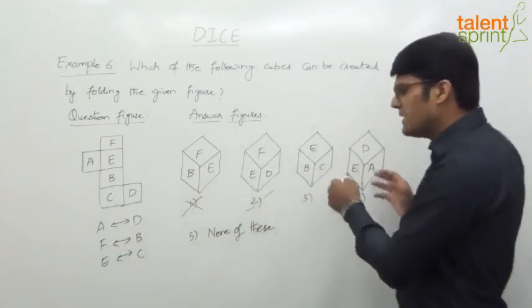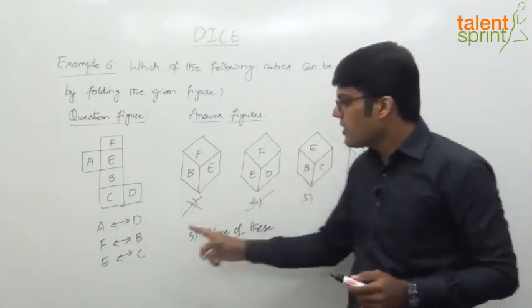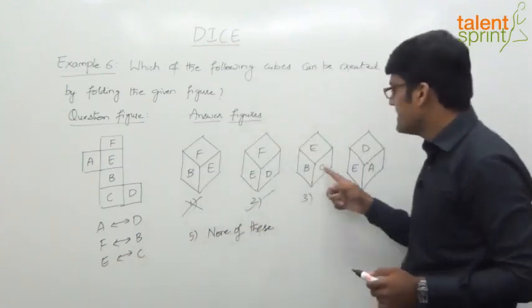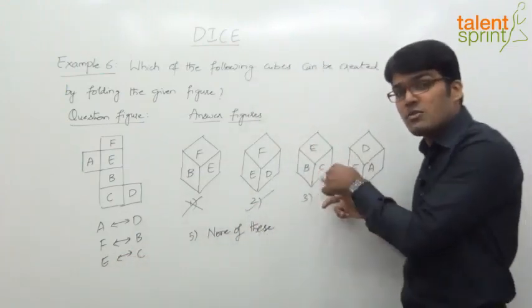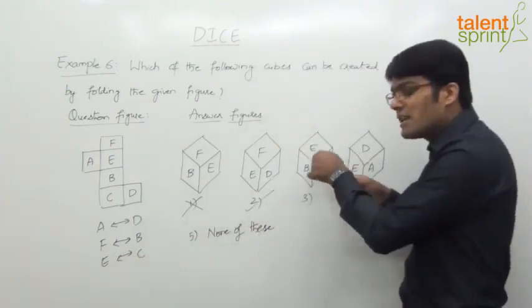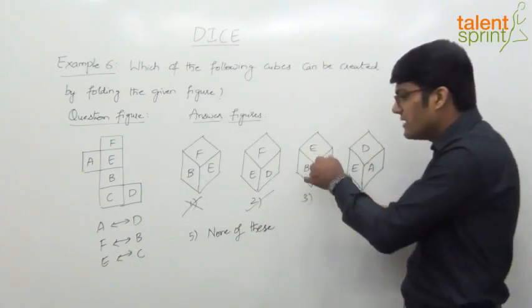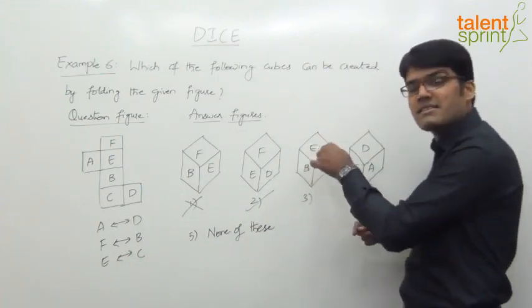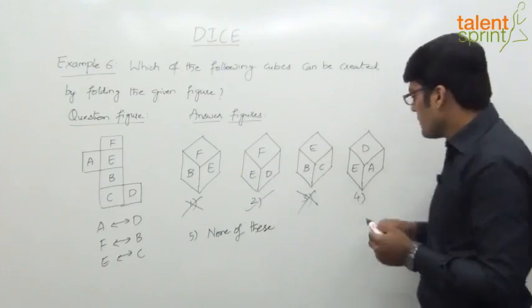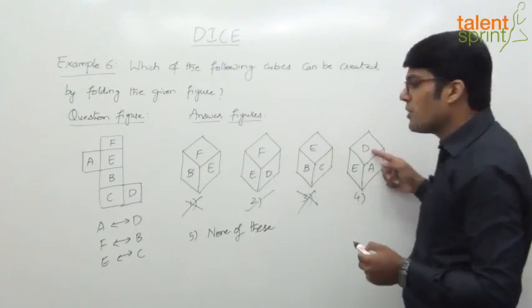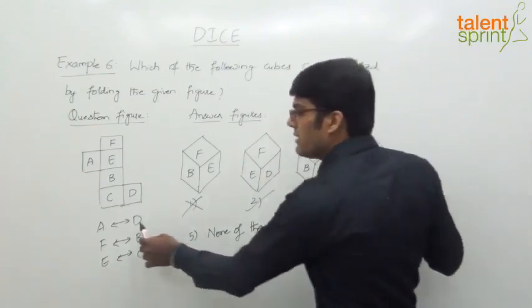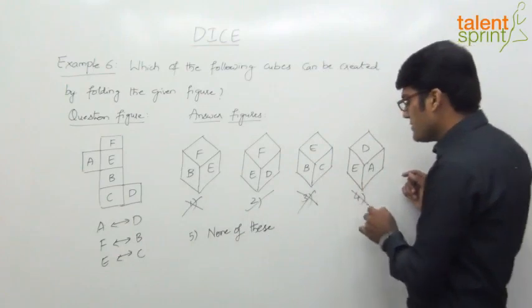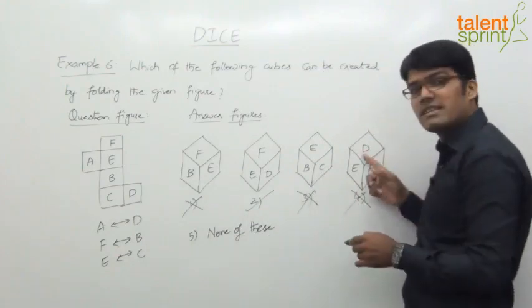Likewise, checking options 3 and 4: for option 3, look at E — what is opposite to E? C. But C is given here, so C should not be given. Opposite faces should not be shown as adjacent. E and C are opposite, yet here they are given as adjacent — hence this is ruled out. For the fourth option, what is opposite to D? A. But A is given here, so this is also ruled out because these are adjacent faces.